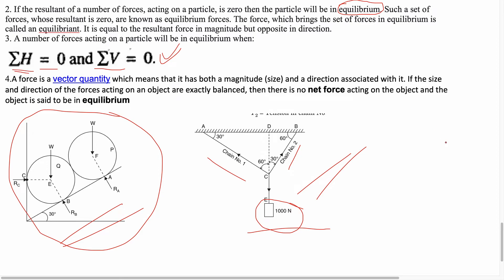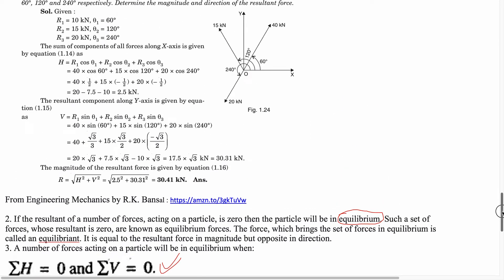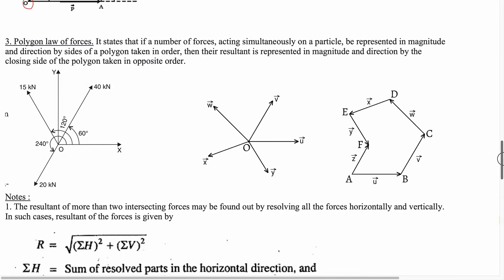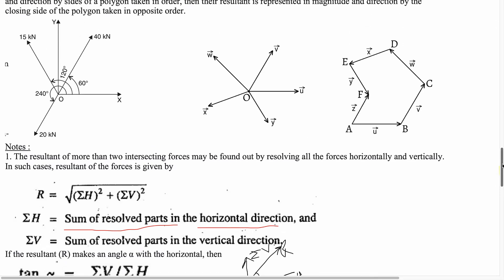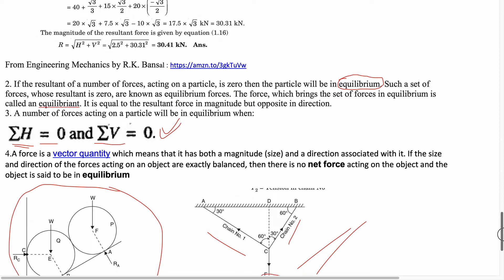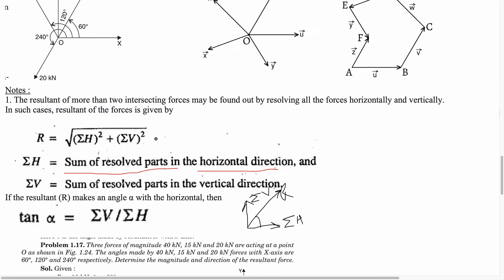Summation H refers to the sum of the resolved parts in the horizontal direction — that is, all forces resolved along the x-axis or horizontal direction. After computing all horizontal components, their summation equals zero. Similarly, the vertical forces summation is zero. So if summation H equals zero and summation V equals zero, the resultant force is zero. The resultant force equals the square root of (ΣH)² plus (ΣV)².